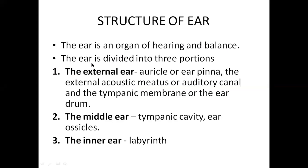The ear is mainly divided into three parts: the external ear, the middle ear, and the inner ear. The external ear consists of the auricle, ear pinna, auditory meatus, and the tympanic membrane. The middle ear consists of the tympanic cavity and ossicles, and the inner ear importantly consists of the labyrinth.